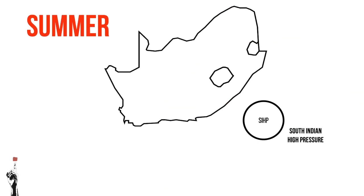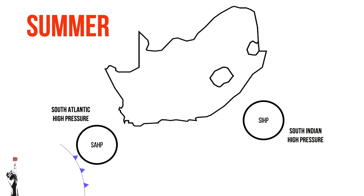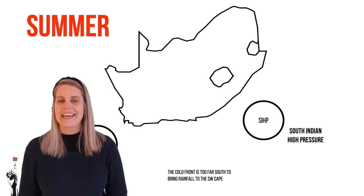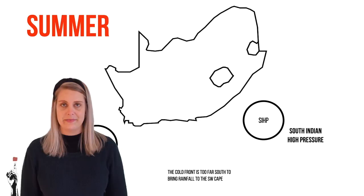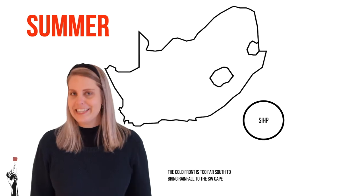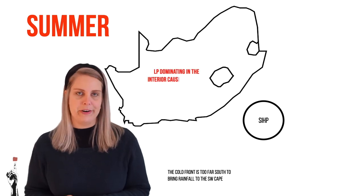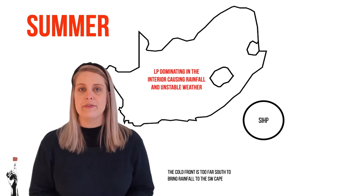In summer, the high pressure cells are further south, in the blocking position, which means that the cold fronts are cut off from reaching land. This is why Cape Town doesn't receive a lot of rainfall during the summer months, and when it does rain, we find it highly unusual. Over the interior of South Africa, instead of the Kalahari high pressure, we now have an unnamed low pressure. This is because of the temperatures and the movement of air, and the conditions experienced here will be exactly like those mentioned earlier.